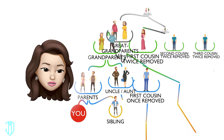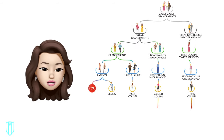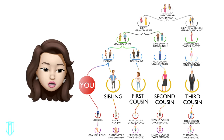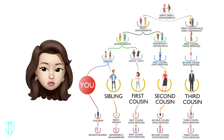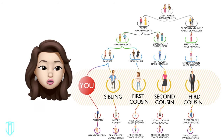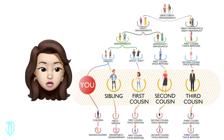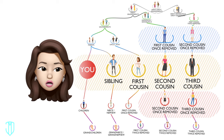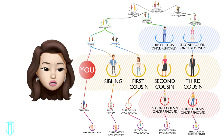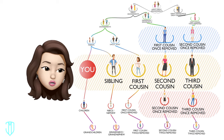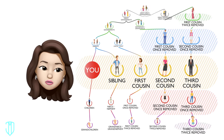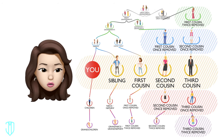If you still didn't follow that, here's another way to look at it. You, your siblings, and your first, second, and third cousins are considered to be in the same generation — not by age or era, but just a categorical grouping. Cousins who are removed are of a different generation. A cousin who is once removed is one generation before or after your generation. A cousin who is twice removed is two generations before or after.